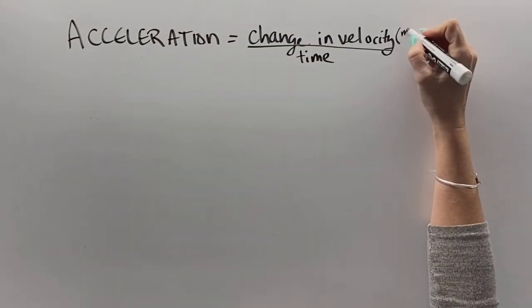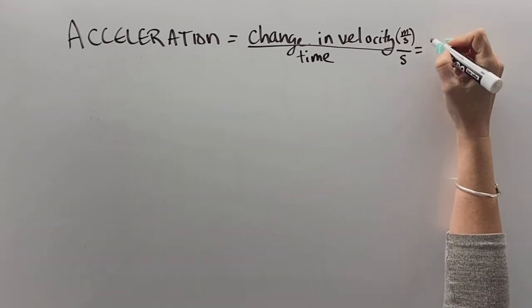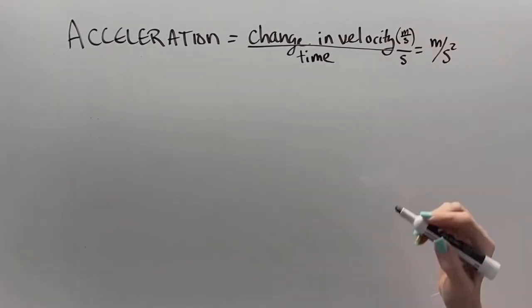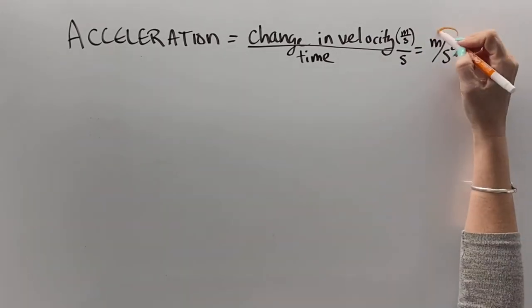The unit for velocity is meters per second, and the unit for time is seconds. So meters per second divided by seconds gives us meters per second squared.